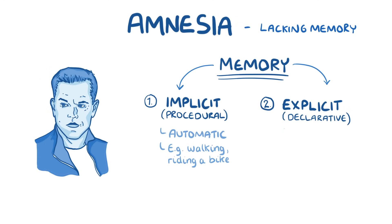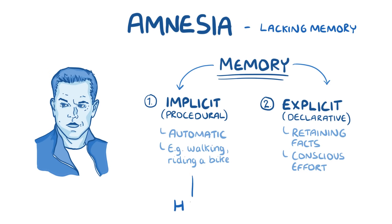Declarative memory refers to retaining facts — the sort of stuff you need to win a trivia contest — and these memories do take conscious effort to retrieve. When trying to remember things like how many countries start with the letter J, most of us need to stop and focus. It's three, by the way. You can think of procedural memory as remembering how, and declarative memory as remembering what.